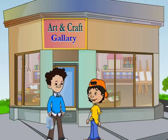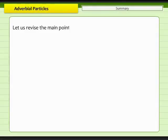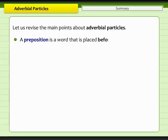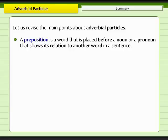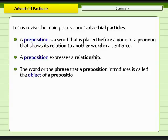Ravi has explained adverbial particles to Sid. Let us revise the main points before Ravi and Sid continue with their craft shopping. A preposition is a word that is placed before a noun or a pronoun that shows its relation to another word in a sentence. A preposition expresses a relationship. The word or phrase that a preposition introduces is called the object of a preposition.